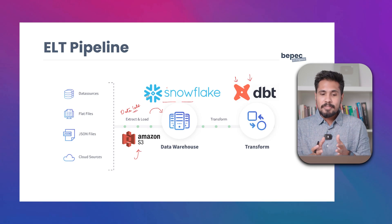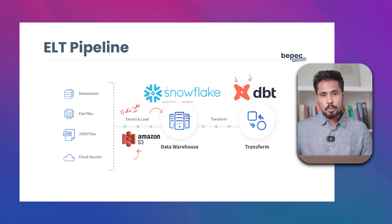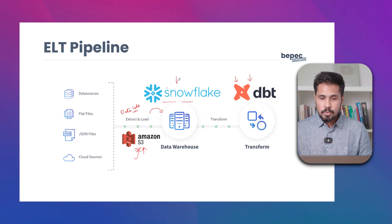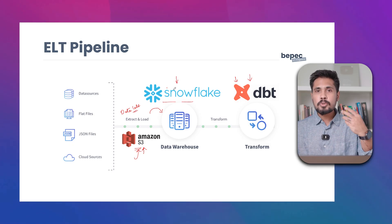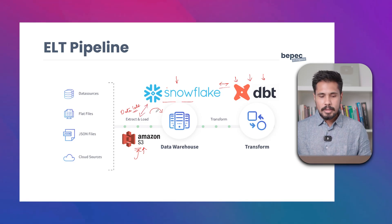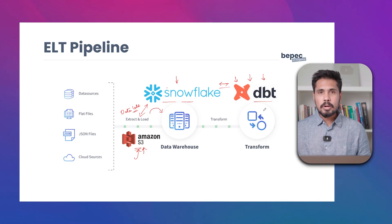To build this ELT pipeline, you need two accounts. First, an AWS account — you collect the data and load it into S3, which is your data lake. You also need a Snowflake account as your data warehouse, and a DBT account. You build a connection between Snowflake and DBT, and between AWS and Snowflake — so data flows from S3 into Snowflake and gets transformed via DBT.